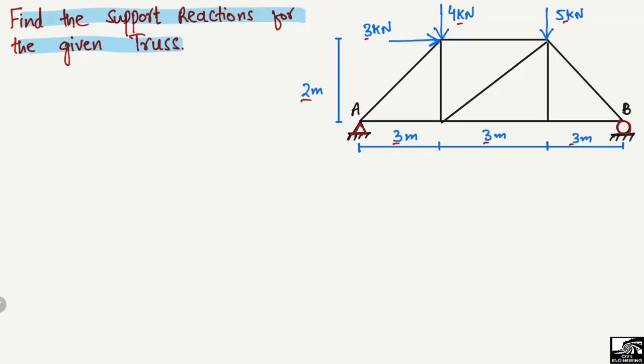To find the support reactions, I will start with the reactions. The hinge support can take two reactions: one vertical, which I'll call RA, and one horizontal, which I'll call RAX, because a hinge support can resist both vertical and horizontal reactions. The roller support can only take the vertical reaction, so it will be RB only.